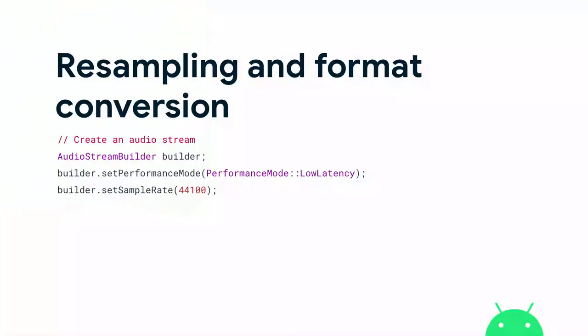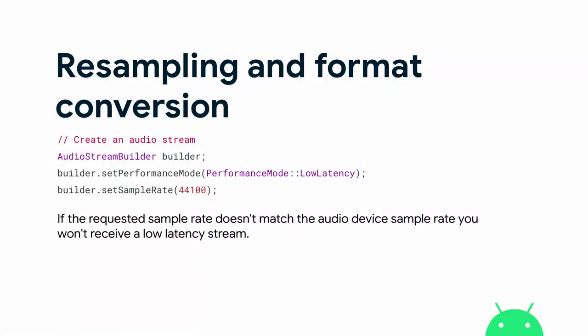The first big feature in Oboe 1.3 is resampling and format conversion. Traditionally when developers wanted to use Oboe, they had audio data in some predefined format — for example, wanting an audio stream at a sample rate of 44,100, but the native device sample rate is 48,000. In that case, you wouldn't get a low-latency stream. This was biting a lot of developers where the only thing they were doing wrong was outputting at the wrong sample rate or channel count. If the requested sample rate didn't match, you wouldn't get your low-latency stream, which could have very severe consequences for your app's performance.